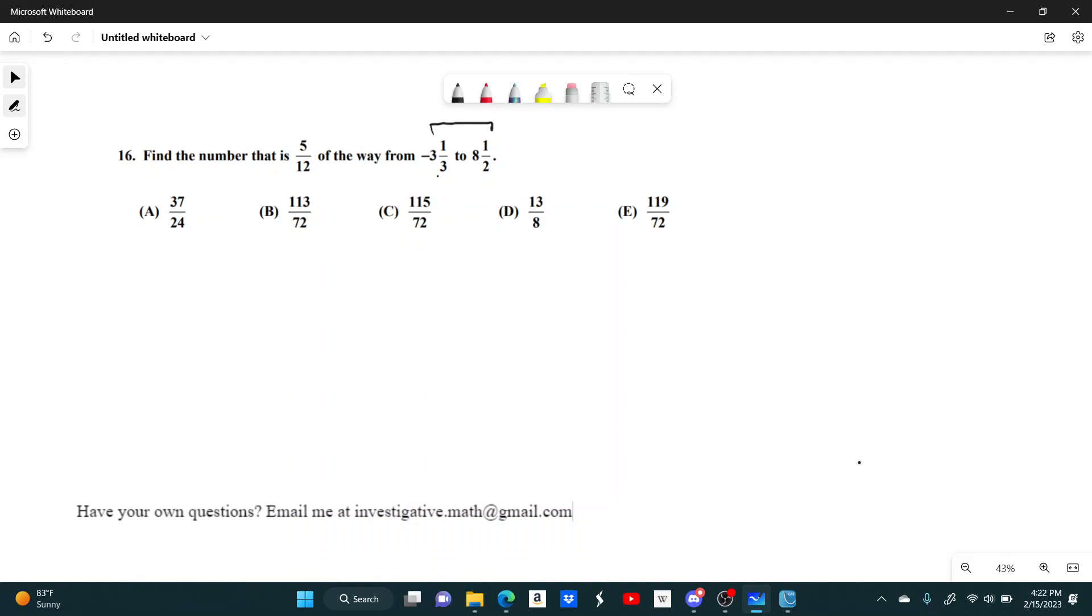What's that going to look like? The distance between negative 3 and a third to 8 and a half is just 8 and a half minus negative 3 and a third, which will be the same thing as 8 and a half plus 3 and a third, which is equal to 11 and 5 sixths. So the total distance is 11 and 5 sixths.